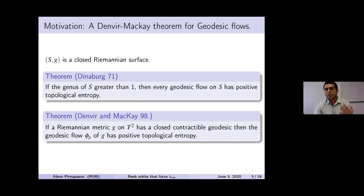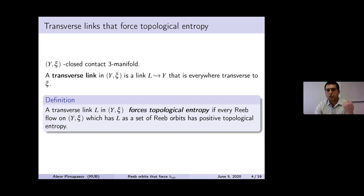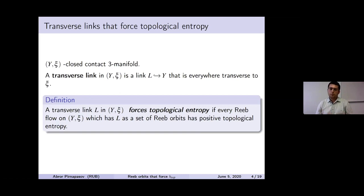Now we give this notion for the Reeb flow category. We always assume Y is a closed orientable 3-manifold and a transverse link is a link everywhere transverse to the contact structure. A transverse link forces topological entropy for every contact form for which L is a set of periodic orbits — that is, for any contact form where L consists of periodic orbits, the Reeb flow always has positive topological entropy. We say such a link forces topological entropy.